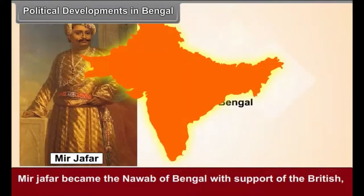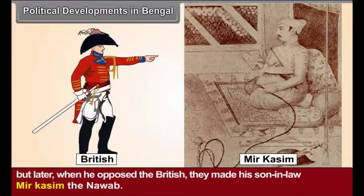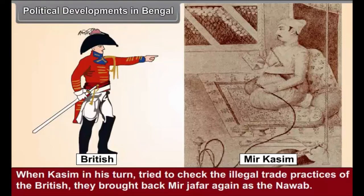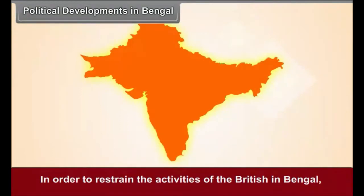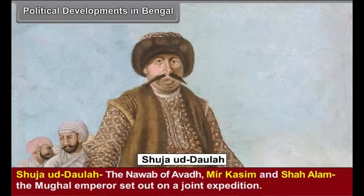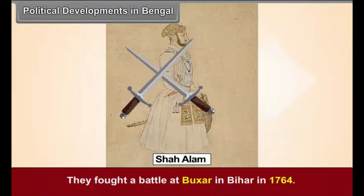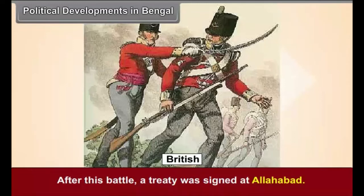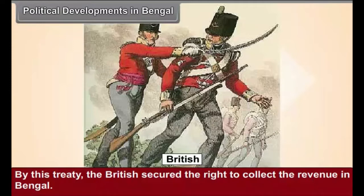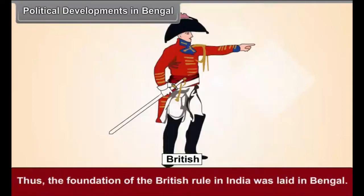Mir Jafar became the Nawab of Bengal with the support of the British. But later, when he opposed the British, they made his son-in-law Mir Qasim the Nawab. When Qasim, in his turn, tried to check the illegal trade practices of the British, they brought back Mir Jafar again as the Nawab. In order to restrain the activities of the British in Bengal, Shuja Uddawla the Nawab of Awad, Mir Qasim, and Shah Alam the Mughal Emperor, set out on a joint expedition. They fought a battle at Baksar in Bihar in 1764. The British won this battle. After this battle, a treaty was signed at Allahabad. By this treaty, the British secured the right to collect revenue in Bengal, known as the Diwani Right. Thus, the foundation of the British rule in India was laid in Bengal.